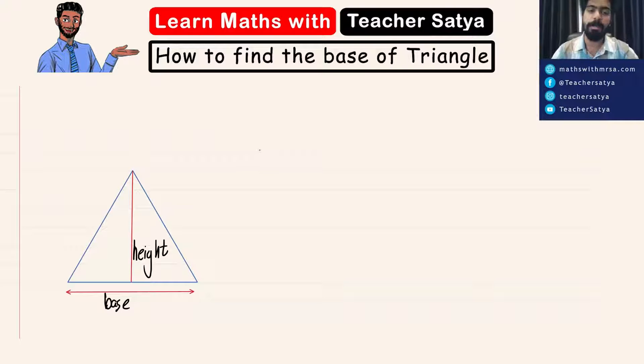First of all, let's start by writing the formula to find the area of a triangle. The area of a triangle is the base multiplied by its height divided by two. If you don't know how to find the area of a triangle, make sure you click on the link that pops up right now.